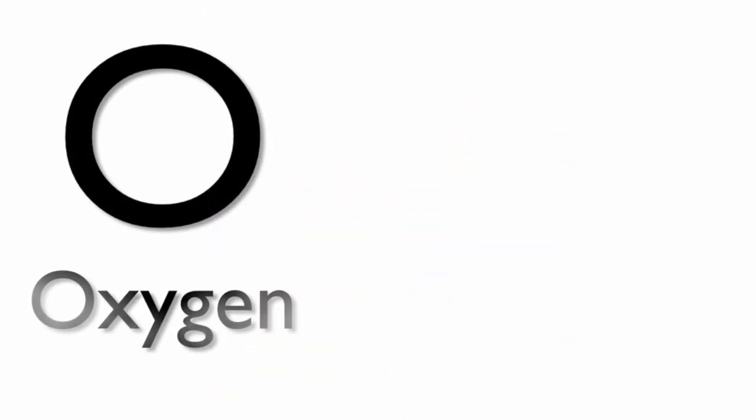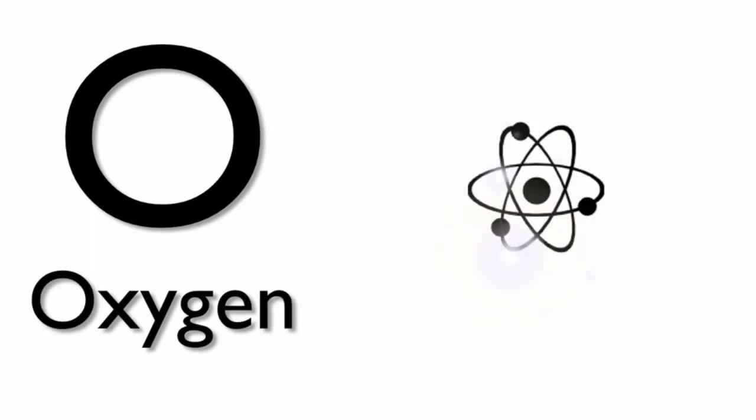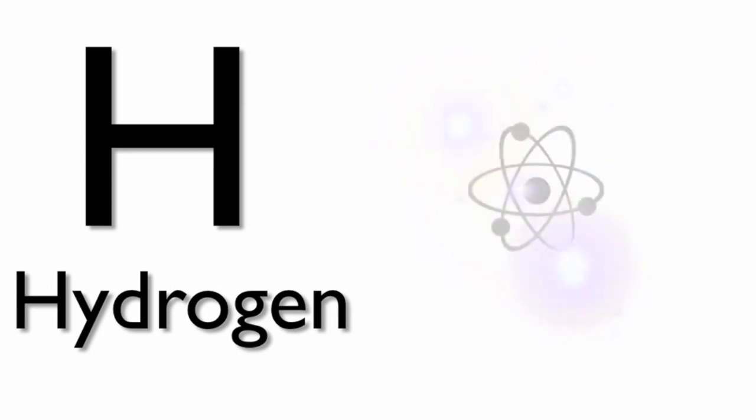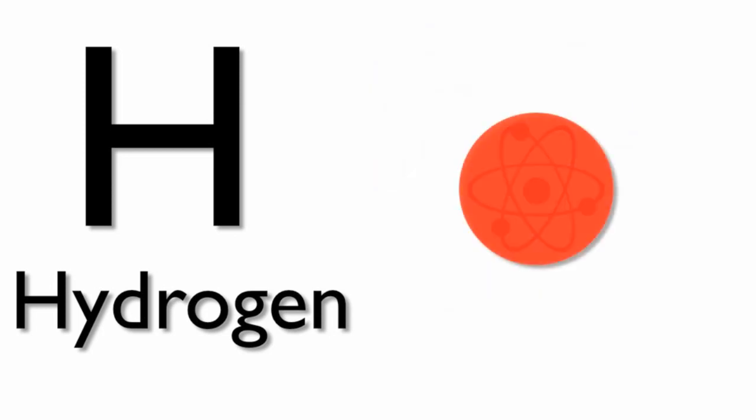Let's take a look at the element O, or oxygen, found on the periodic table of elements. Oxygen is just one type of atom. Here we represent this atom with a blue circle. Another element found on the periodic table of elements is hydrogen. Hydrogen is just one type of atom that we can represent with a red circle.